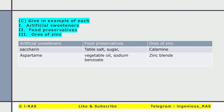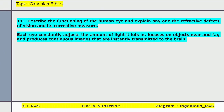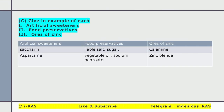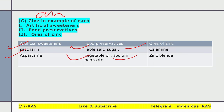Give an example of each: artificial sweeteners include saccharine and aspartame. Food preservatives include table salt, sugar, vegetable oil, and sodium benzoate. Ores of zinc include calamine and zinc blende.